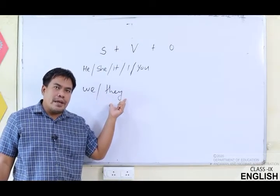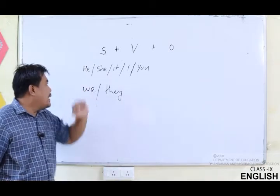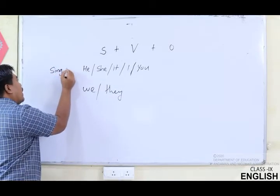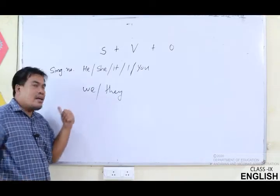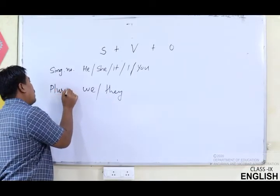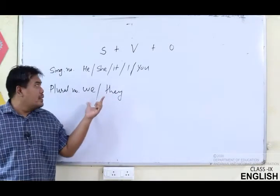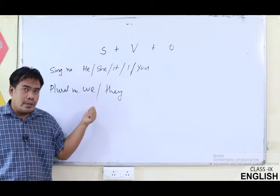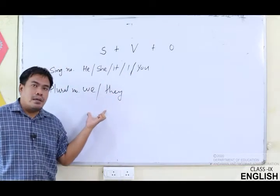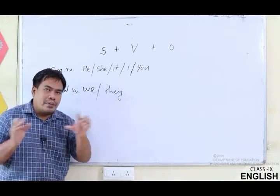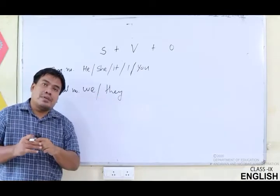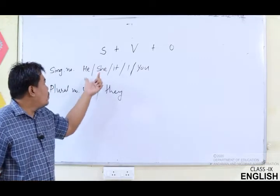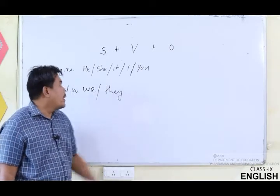Do you remember them from when I taught you in the last class? He, she, it, I, you, they are all singular numbers, and we, they are plural numbers. The reason we are talking about the subject is because this is the main part where you have to start — when framing a sentence, you need a subject. Without the subject you cannot frame a sentence, so you could use he, she, it, I, you, or we, they.